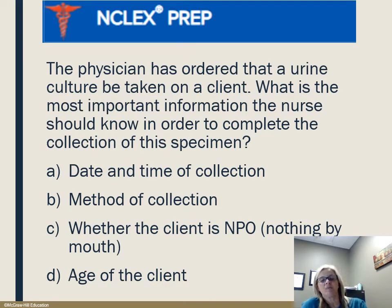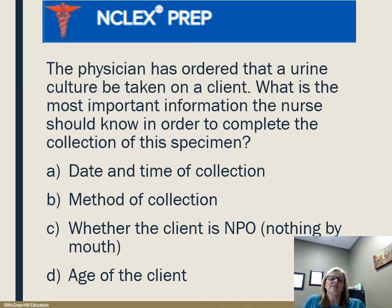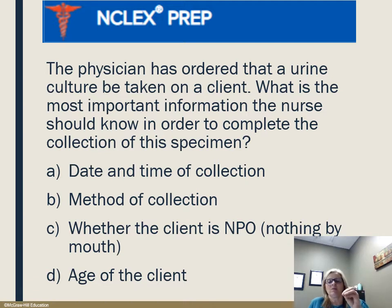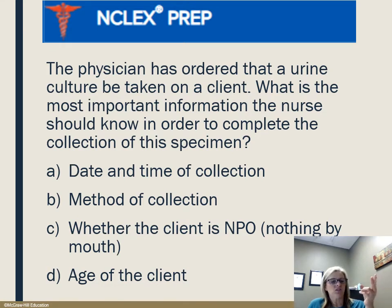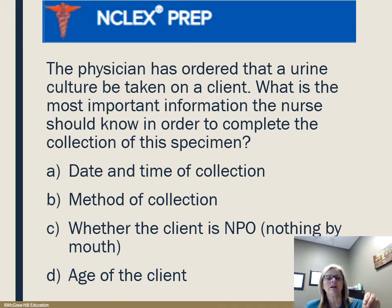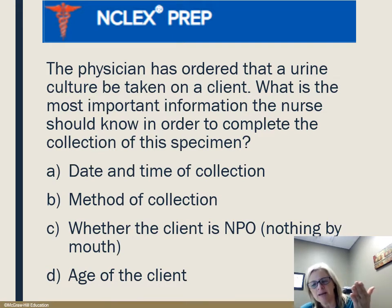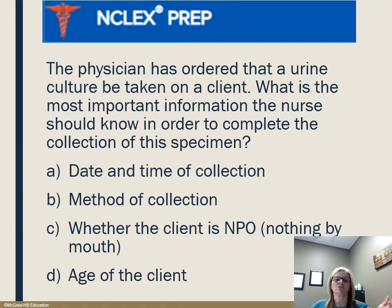From time to time I'm going to include some NCLEX prep questions — be sure to read them in the chapter as well. A physician has ordered a urine culture on a client. What is the most important information that the nurse should know in order to complete collection of the specimen? Options are: A) date and time of collection, B) method of collection, C) whether the client is NPO, or D) the age of the client. Think about what we've just been talking about. If you said B, you are correct — method of collection. In other words, is this urine sample a clean catch? Could there be anything contaminating the specimen?